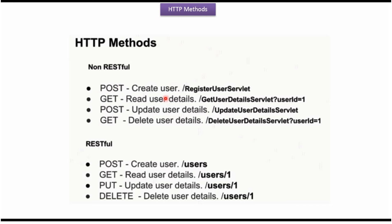In case of creating the user we have to use POST method, and in the body of the request we have to send the JSON payload which contains user information like user name, email, age etc. Here is the URI: register user servlet. In case of reading user details we have to use GET method and the URI will be get user details servlet, then the user ID we have to send in the query parameter.